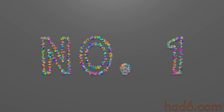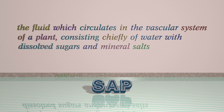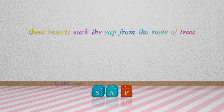Number 1: Sap. Which means the fluid which circulates in the vascular system of a plant, consisting chiefly of water with dissolved sugars and mineral salts. For example: These insects suck the sap from the roots of trees.